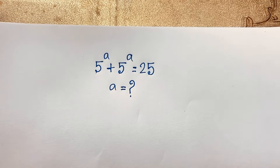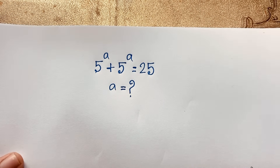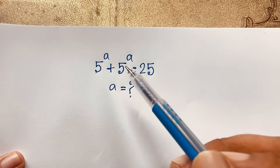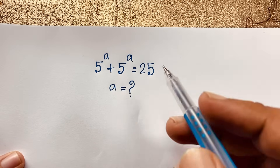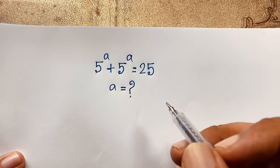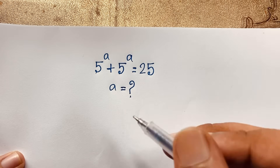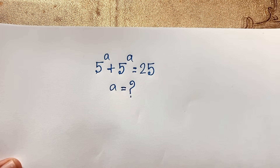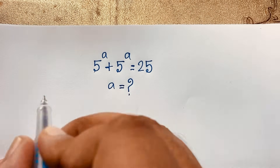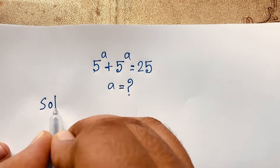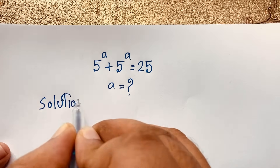Hello everyone, welcome to Russia's Classroom. Today we'll solve an interesting exponential math olympiad question: 5 to the power a plus 5 to the power a is equal to 25. What is a? Let's see how to solve this interesting exponential math question.